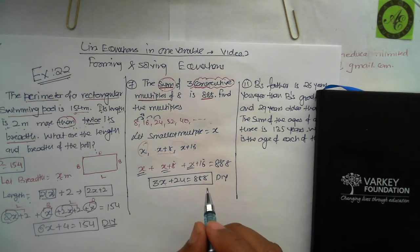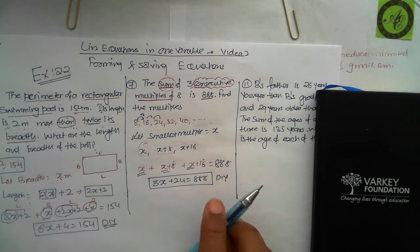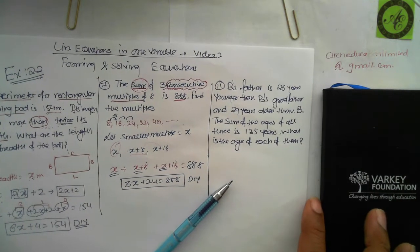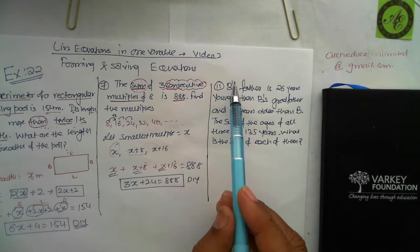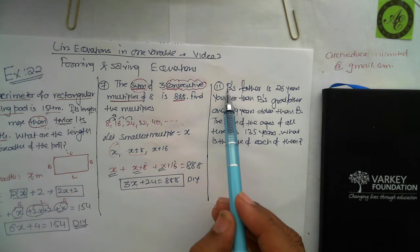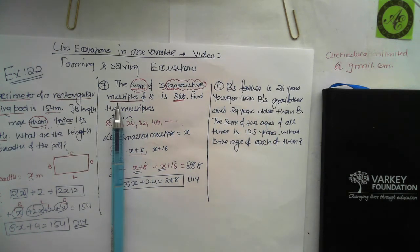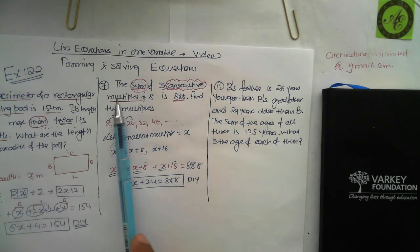The third question uses Bichung's name, shortened to B to avoid writing it again and again. Bichung Bhutia is a famous Indian football captain. Read the question and we'll work on it together.